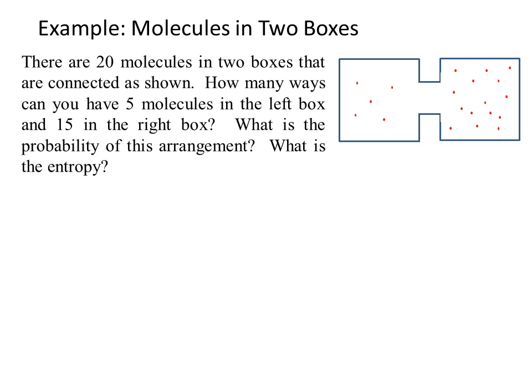Let's look at an example of molecules in two boxes. There are 20 molecules in two boxes that are connected as shown. How many ways can you have 5 molecules in the left box and 15 in the right? What is the probability of this arrangement? And what is the entropy?